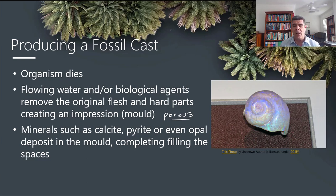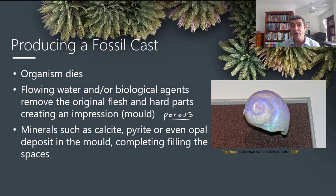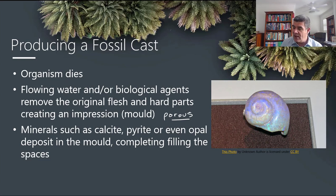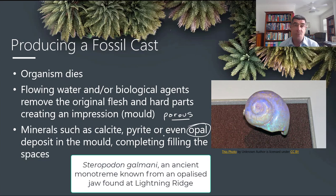Casts tend to be relatively restricted in the types of materials, though potentially they could be anything. Calcite, for example, is often a mineral deposited in these molds to create casts. Some pyrites — iron ores — are also ones we sometimes find in casts. Some very beautiful opal fossil casts have also been found, particularly here in Australia. I remember seeing a photo of one of the ancient platypus and the fossilised jaw from that particular animal — very impressive.